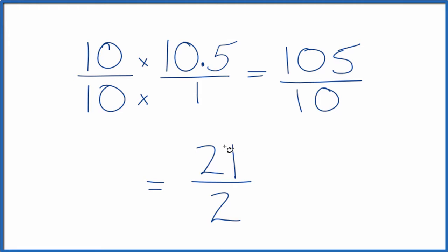This is an improper fraction because 21 is larger than 2. So let's change that to a mixed number. 2 goes into 21 10 times with 1 left over. Bring the 2 across and the mixed number would be 10 and 1 half.